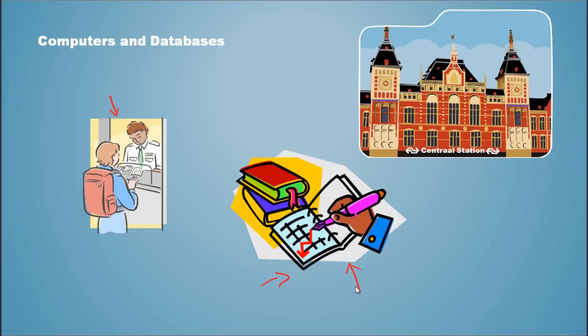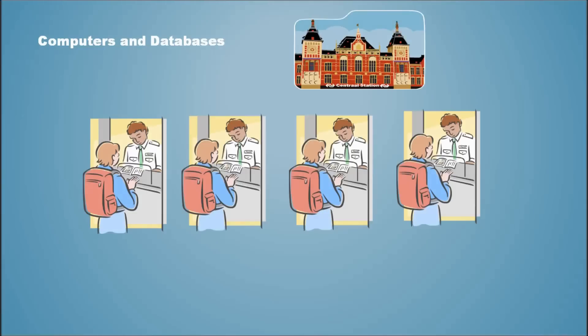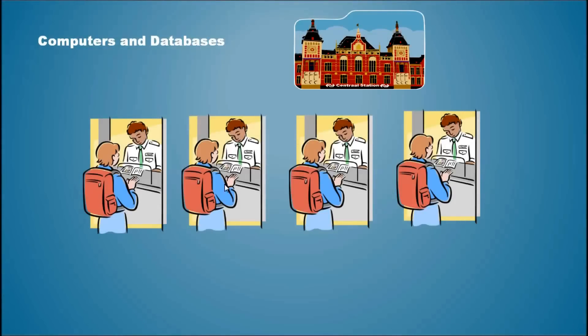Now that train station becomes very popular. More and more people are starting to use it. And so the ticketing booth gets very crowded often. That's an issue. So how do we solve it? Open more booths. Simple. Just open more booths. Now people can buy tickets easily without waiting for a longer period.